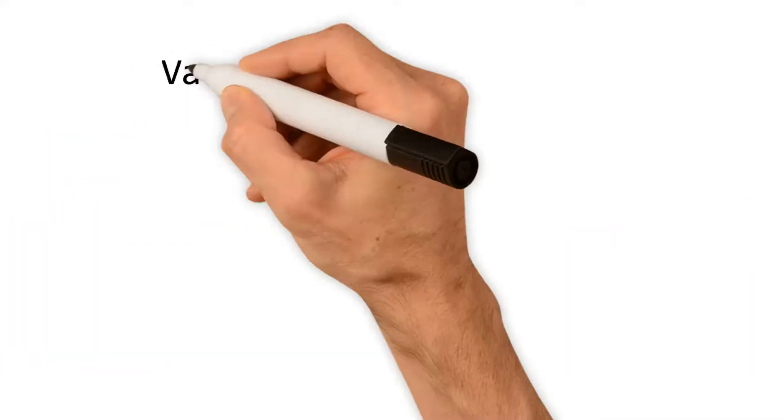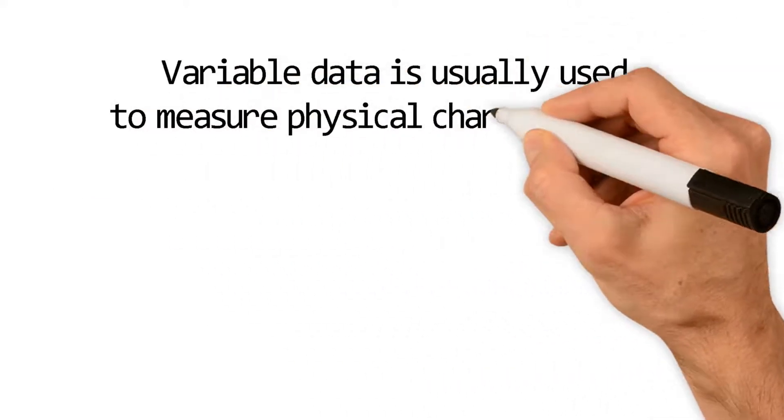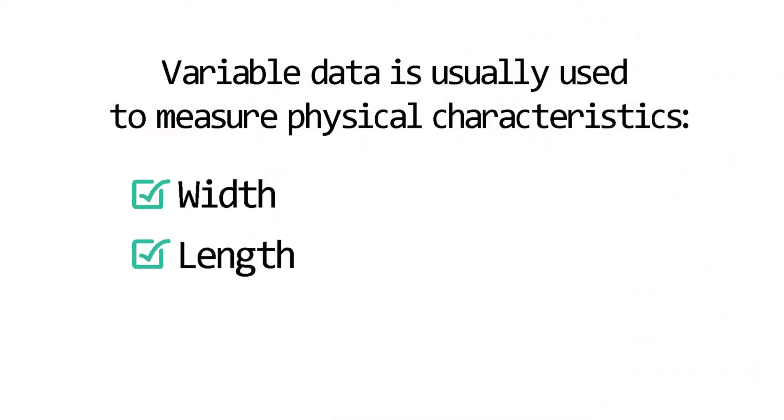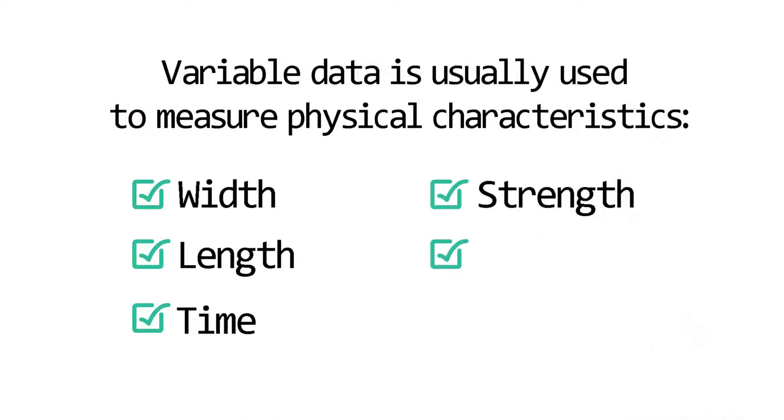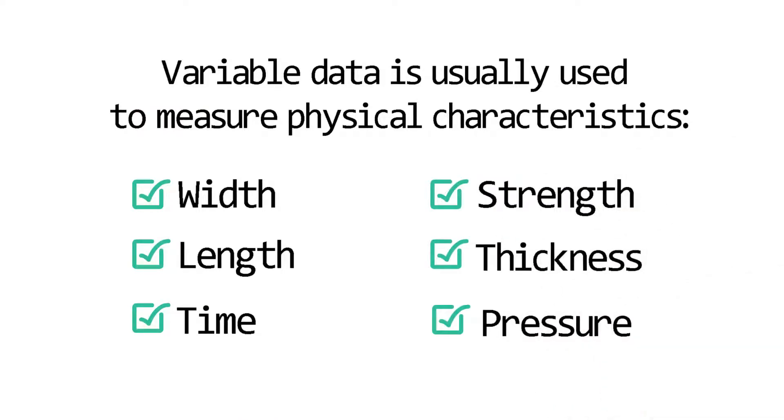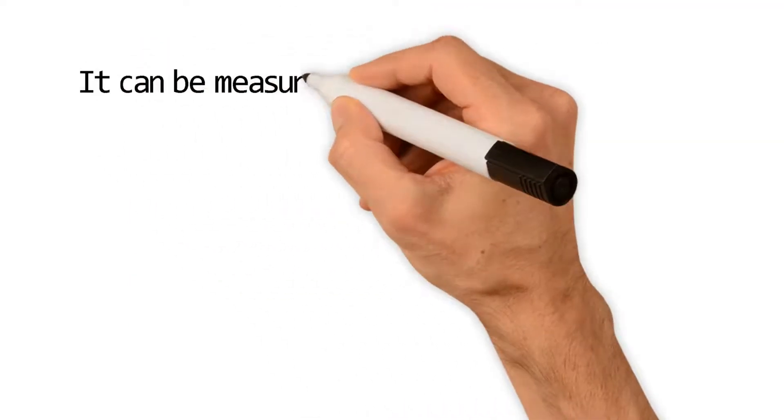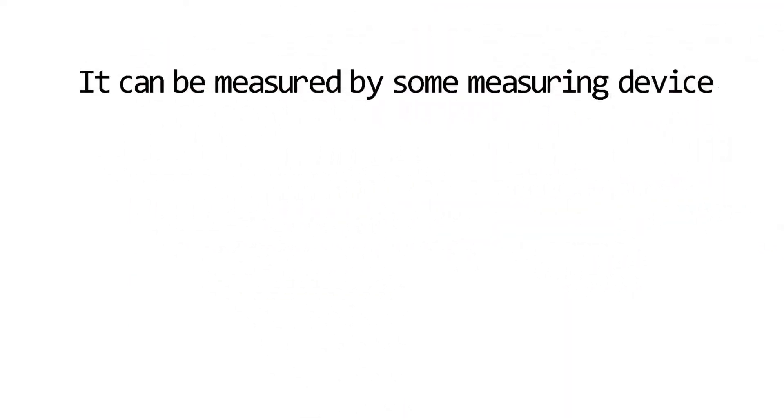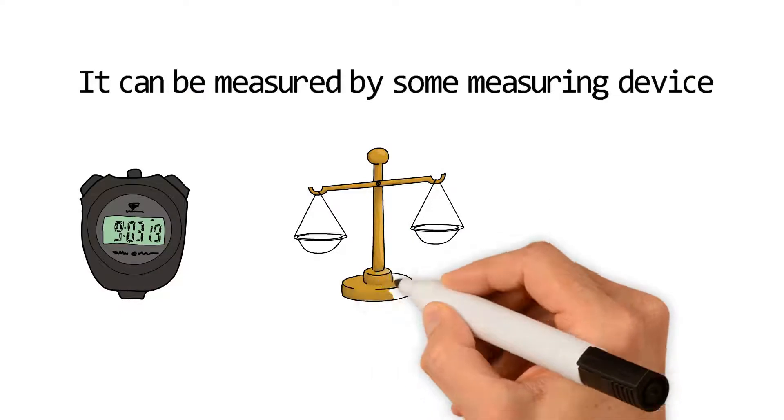Variable data is usually used to measure physical characteristics such as width, length, time, strength, thickness, pressure, and so on. A good definition of variable data is that it can be measured by some measuring device, such as a stopwatch, scale, or measuring tape.